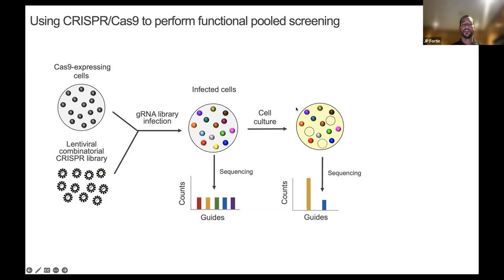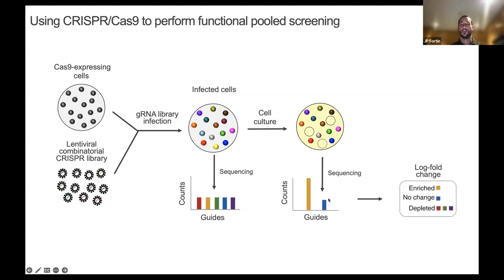At the beginning of the experiment, when editing is not happening yet, we do some sequencing — these are basically guide RNA counts at the beginning. Then after some cell culture or selection, we again count the guide RNAs. By looking at the difference between the latest time point and the early time point, we calculate a log fold change, and by looking at the log fold change, we can investigate the effect of the genomic perturbation in the cells.